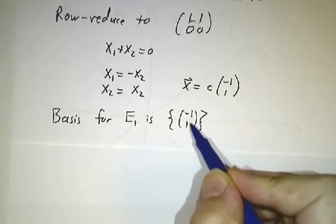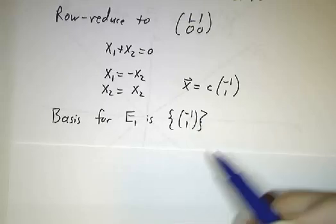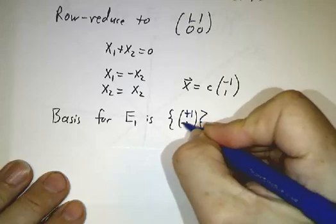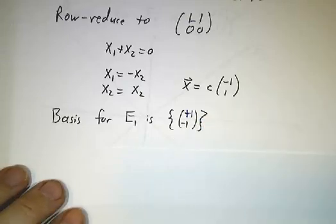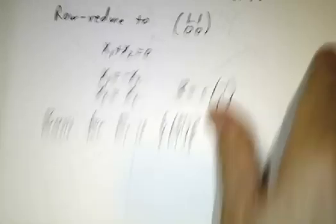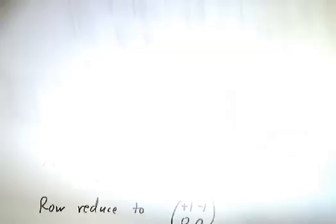Now we could have used twice that vector or three times that vector or minus that vector. Sometimes it's more convenient to work with instead of. But it's the same direction. It's the axis that's running northwest to southeast. That's one eigenvalue. We still have to look at the other eigenvalue.